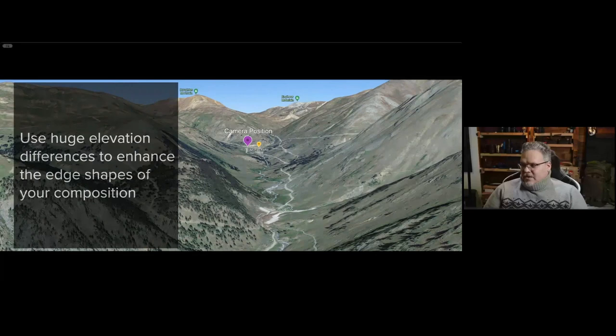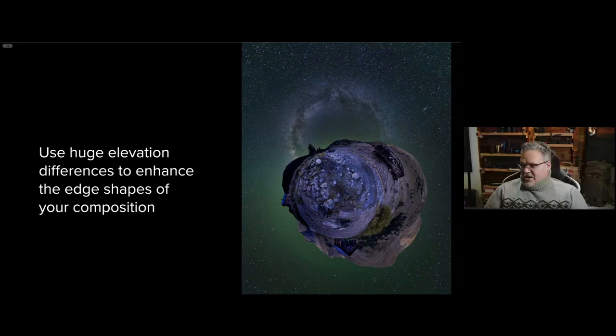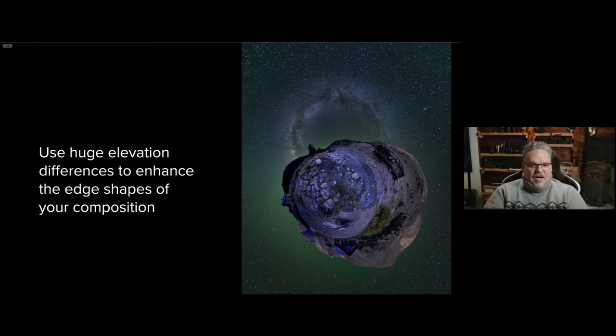Down in a valley at 11,000 feet, the peaks around me were much taller — 14,000 to 15,000 feet. This is one of my favorite examples, shot at dusk and two hours later with the stars. I'll show a demo of how I assembled it later. The idea is that huge elevation differences make compelling tiny planets. I walked into this scene never having seen it before and immediately knew what I was going to do — set up on the edge of a river.